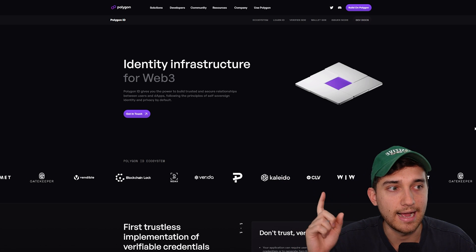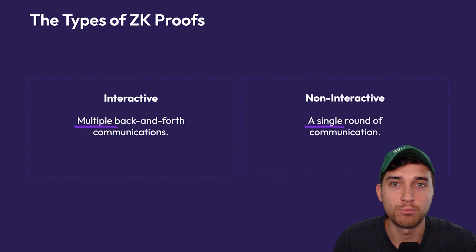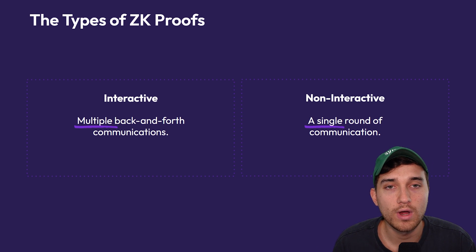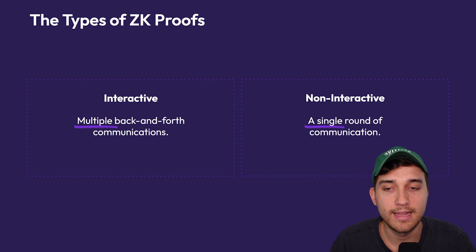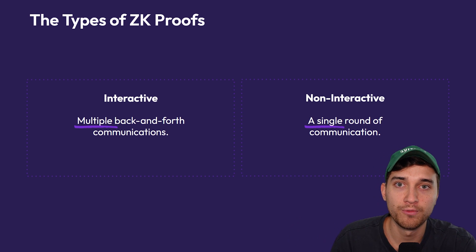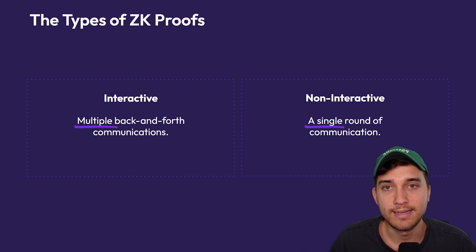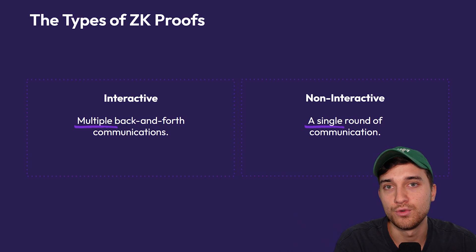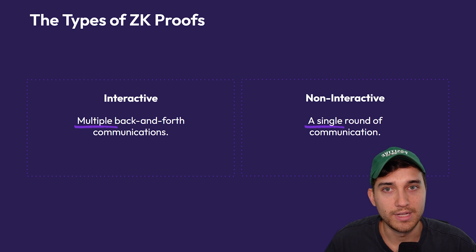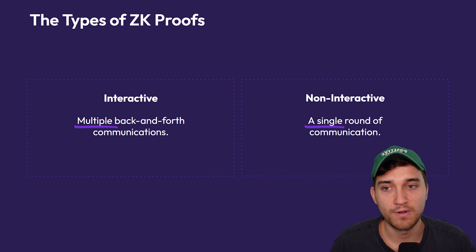This is actually what the product called Polygon ID is building out, which we may have further content on later. In a broad sense, there are two categories of zero-knowledge proofs: interactive and non-interactive. Interactive proofs involve multiple back-and-forth communications between the prover and the verifier — it might go prover to verifier to prover to verifier X number of times — whereas non-interactive refers to zero-knowledge proofs where only one single round of communication from prover to verifier is required.